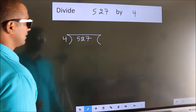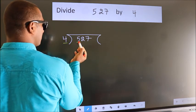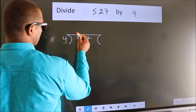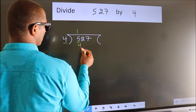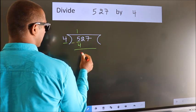Next. Here we have 5, here 4. A number close to 5 in 4 table is 4 once 4. Now, we should subtract. We get 1.